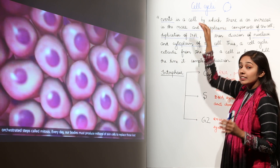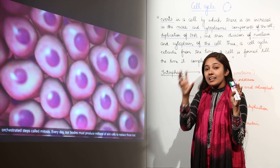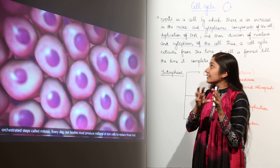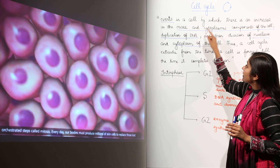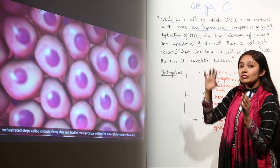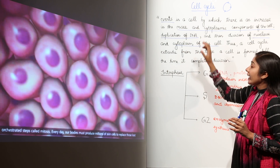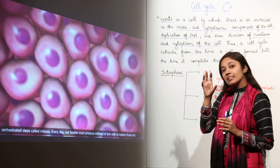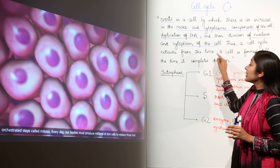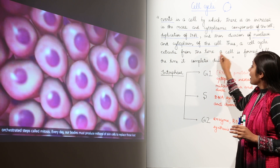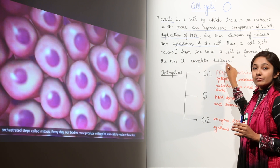The cell cycle starts from the beginning to the end. Supposing we have a cell — the cytoplasmic components and the mass of the cell will increase, DNA will duplicate, and then finally the nucleus and cytoplasm will divide. Thus, a cell cycle extends from the time a cell is formed till the time it completes division.